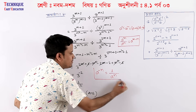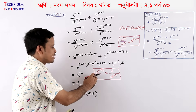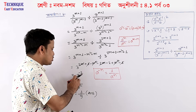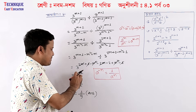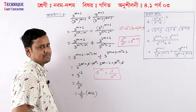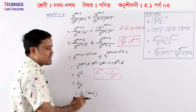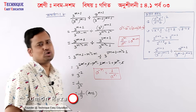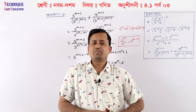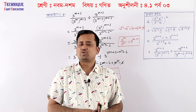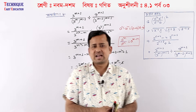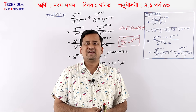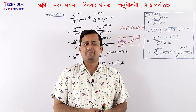n. So, 1 by a to the power n. So, the rule for a to the power minus n is 1 by a to the power n. For example, 3 to the power minus 2: 1 by 3 squared. 3 squared means 9. So, 1 by 9 is the answer. Thank you very much.